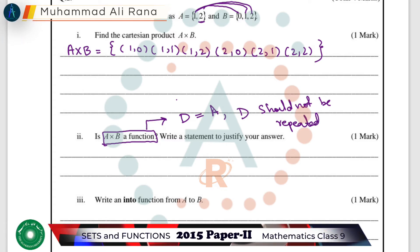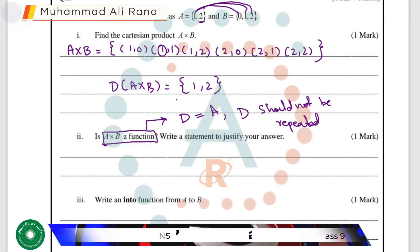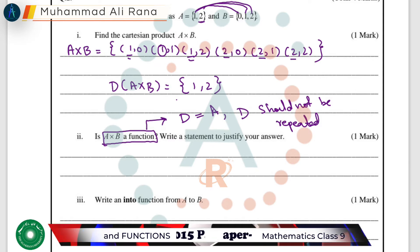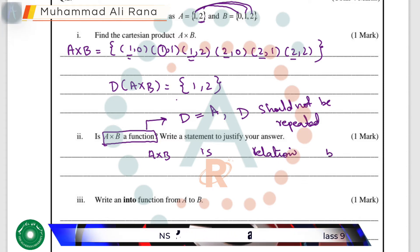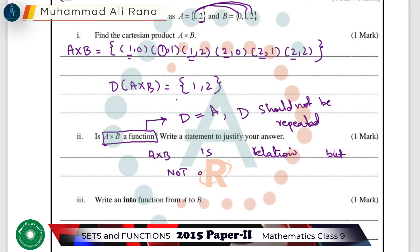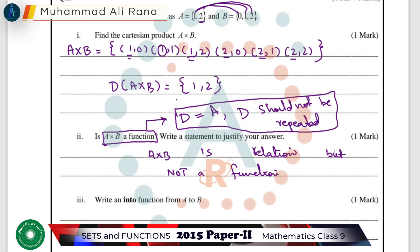If we find the domain of the Cartesian product A cross B, it equals {1, 2}, which is equal to A. However, as we can see, we have multiple domain values that are repeated — the domain value 2 is repeating. This means A cross B is just a relation from A to B, but clearly it is not a function, since domain values must never repeat in a function.